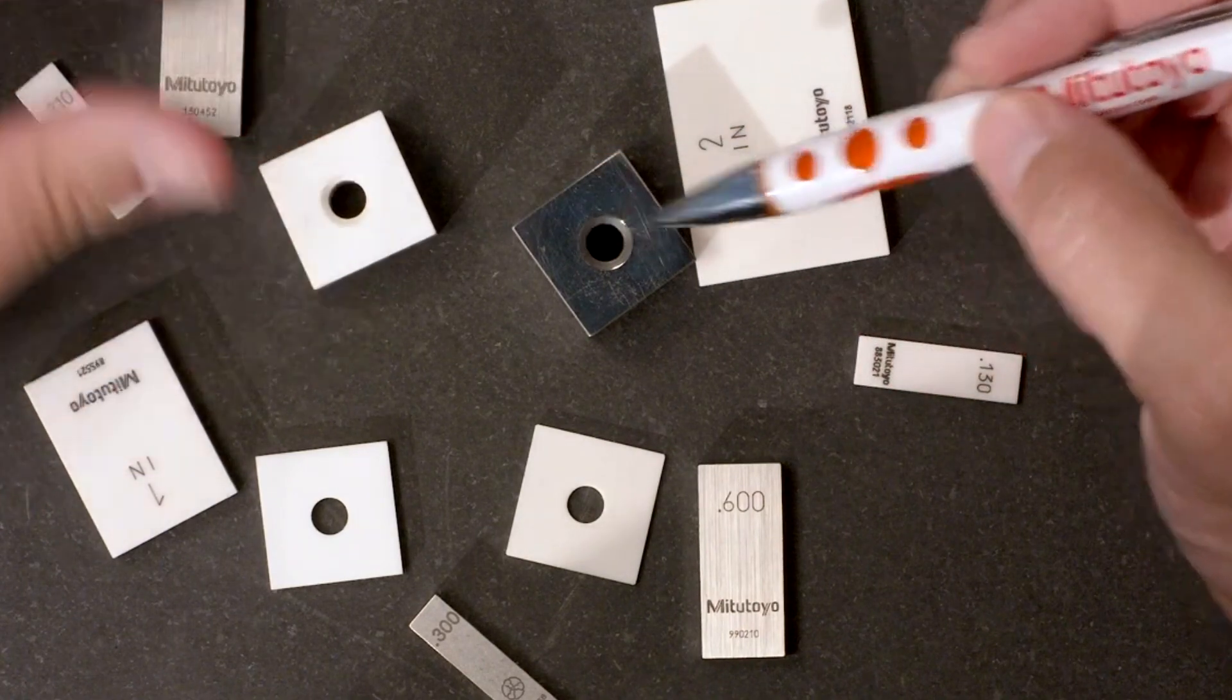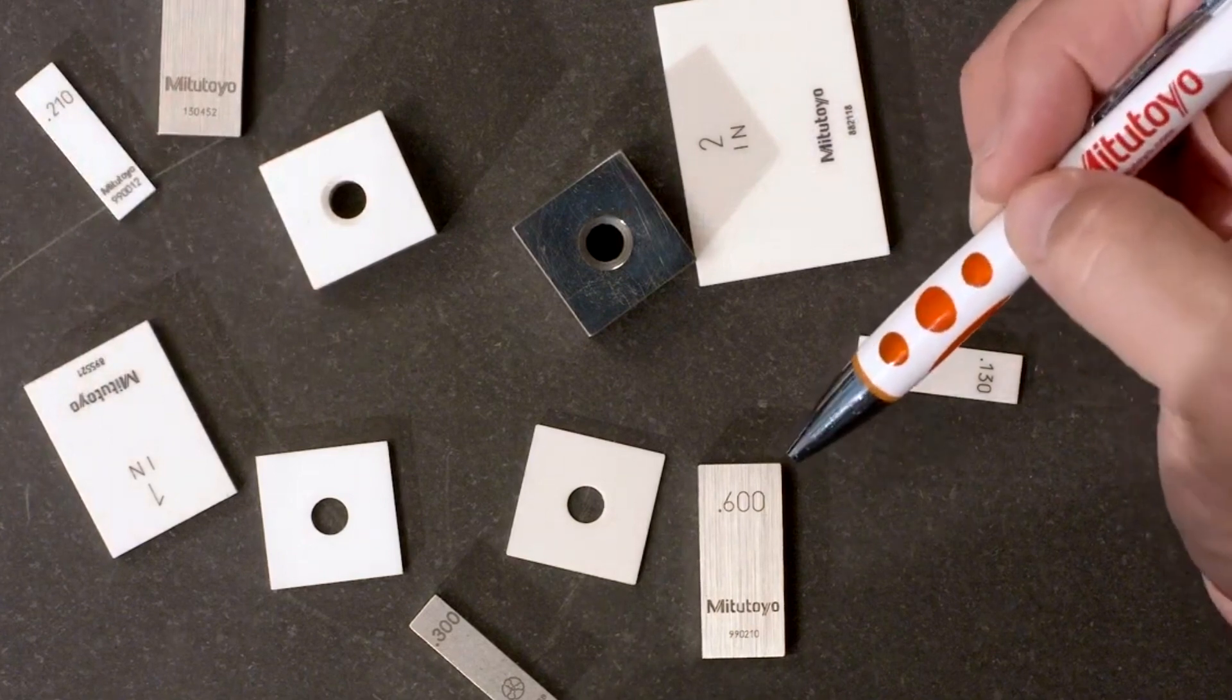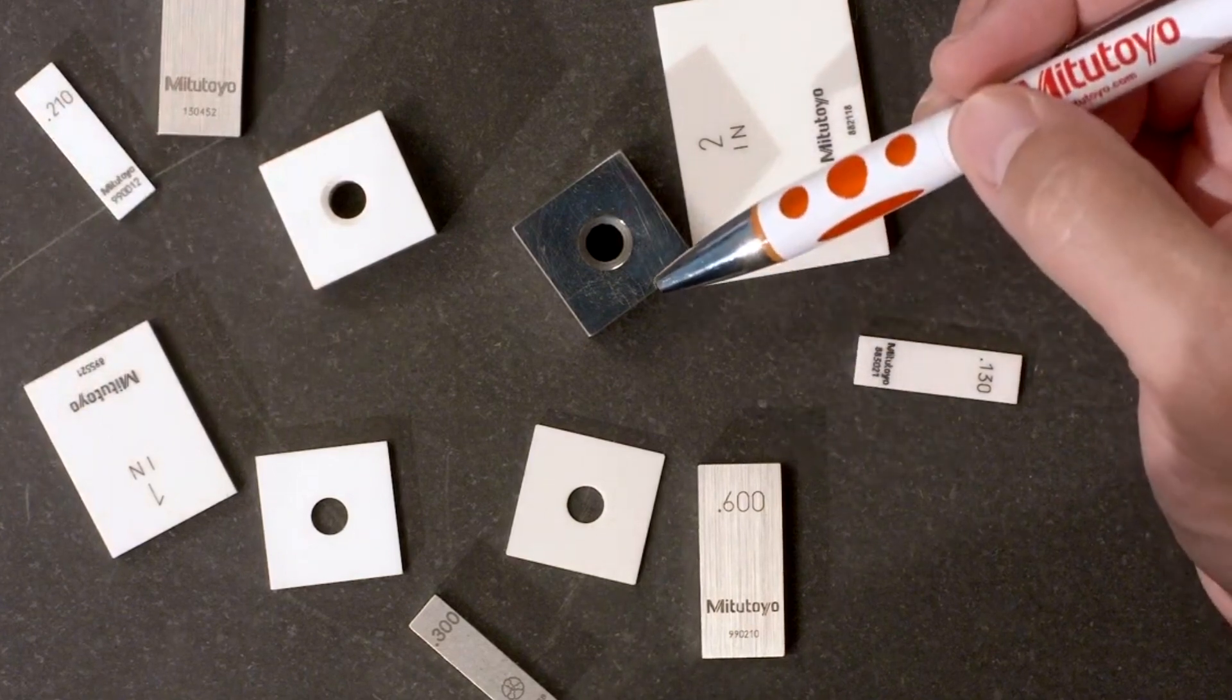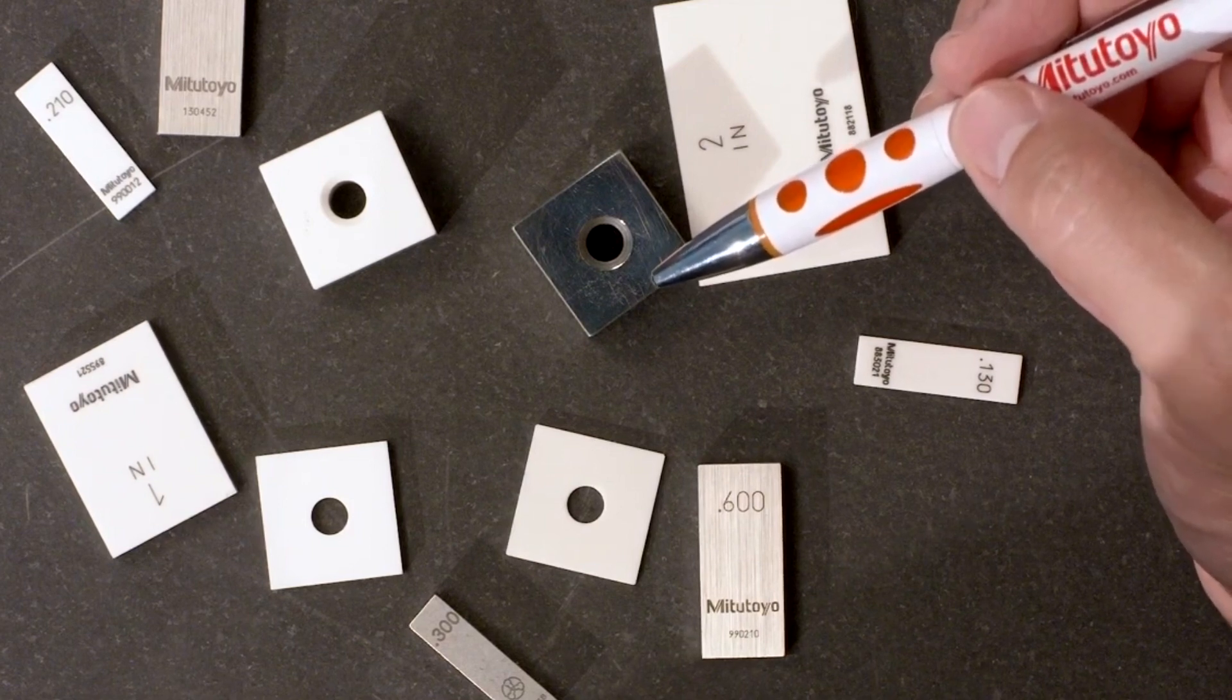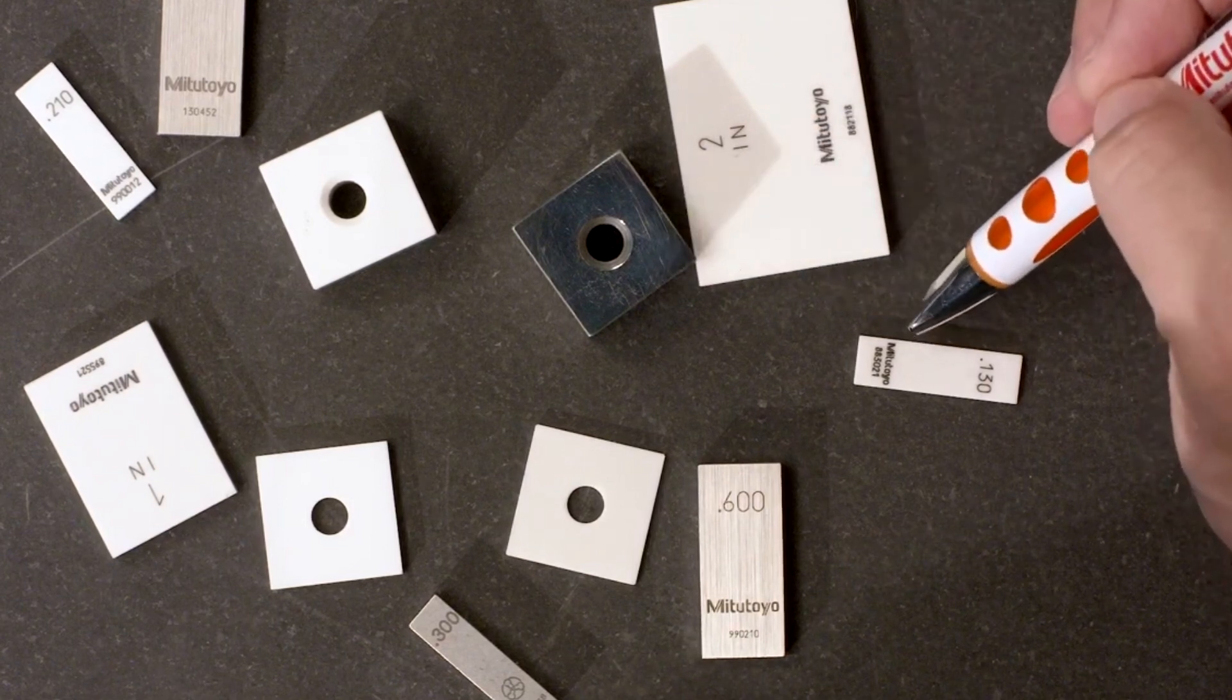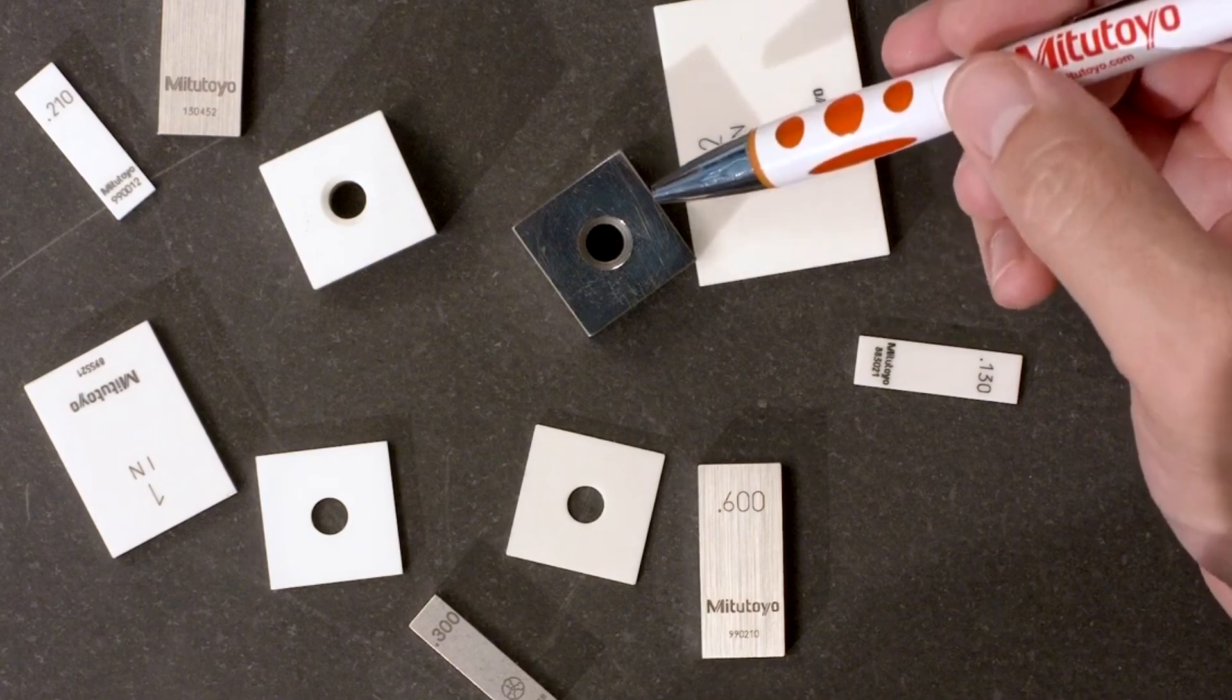Rectangular blocks are much more common, but some people like the square blocks. In other episodes of the Metrology Training Lab, you'll see us picking either rectangular or square blocks for various tasks.